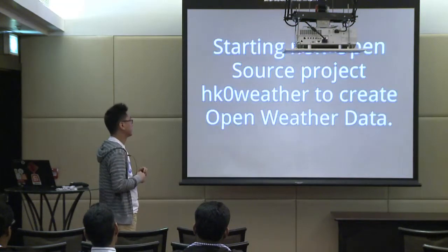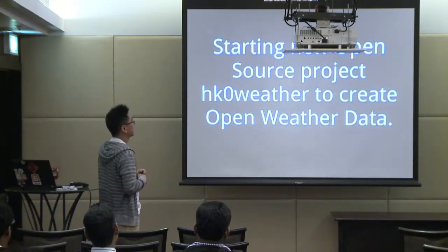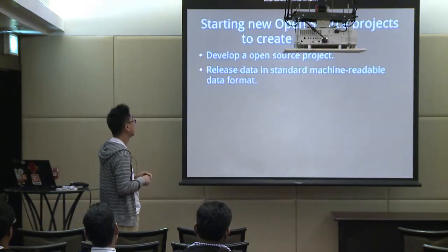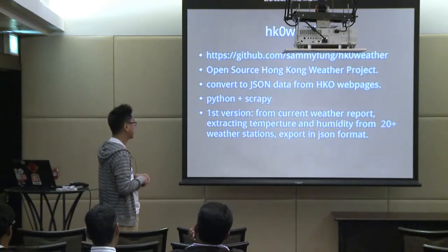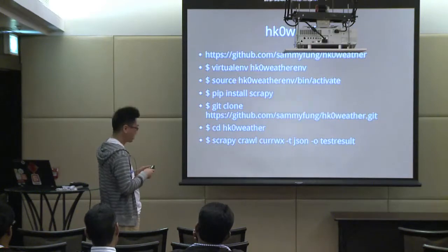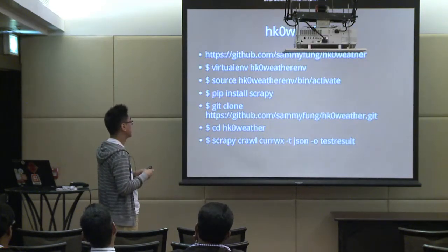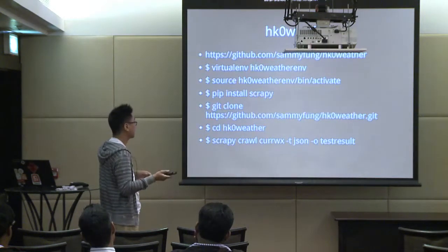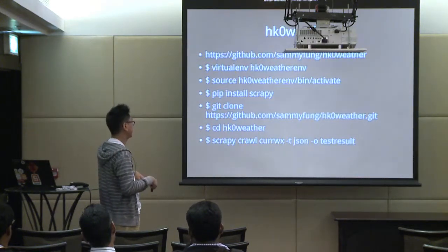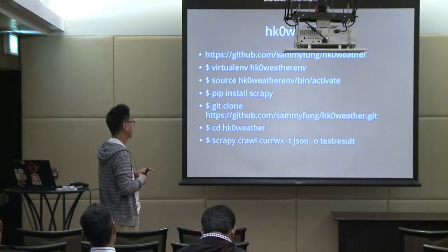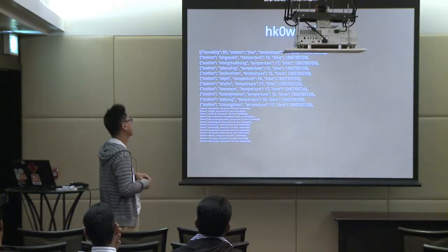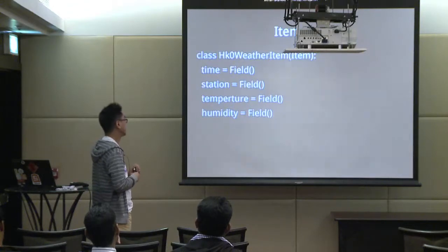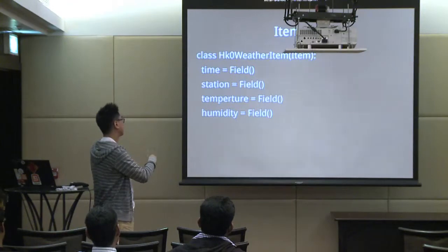With better information for citizens in a better format being very important, I started an open source project this year called HKCOWeather, aimed to collect information from websites and release data in machine-readable format. Same as before, I use Python and Scrapy. You can download it from my GitHub, use five to six commands to set up your Python environment, install Scrapy, download the source code from GitHub, and then just run this command and you will get a JSON format result.